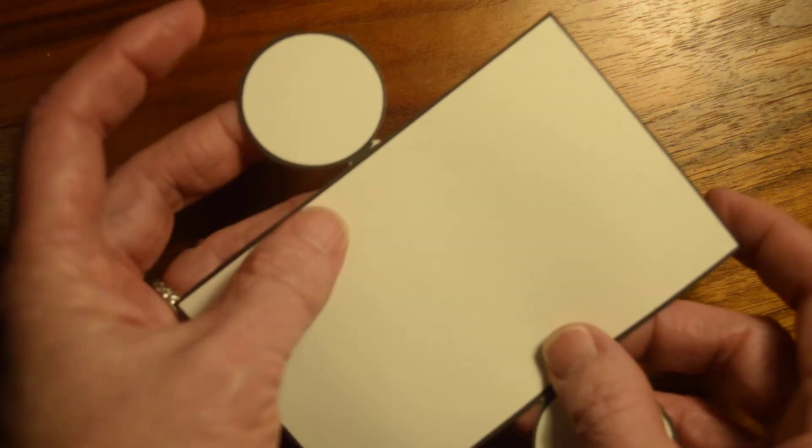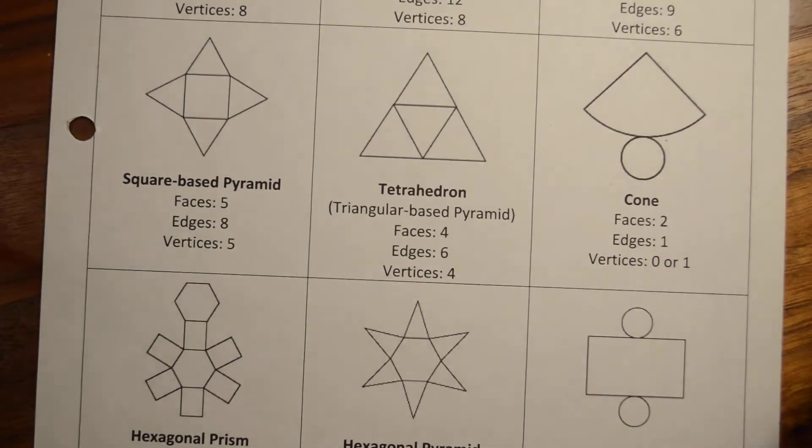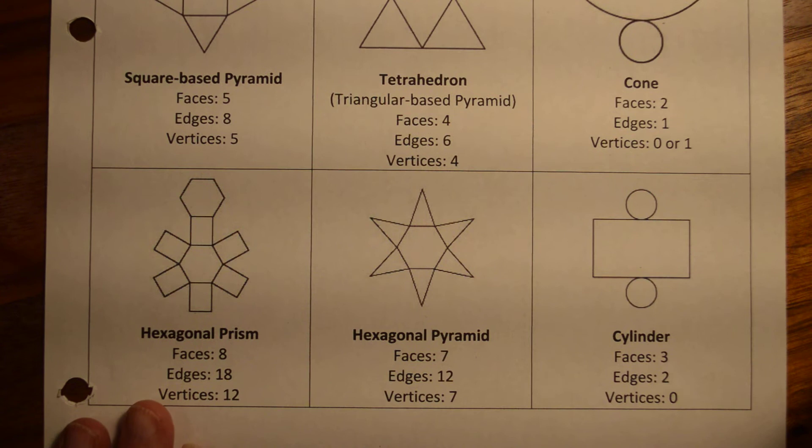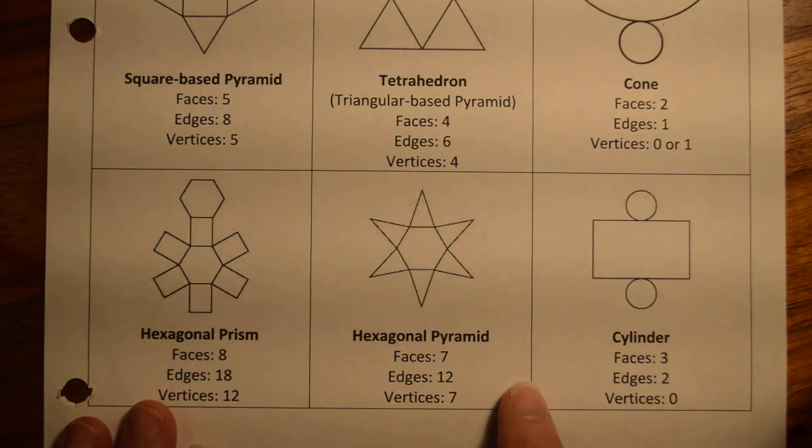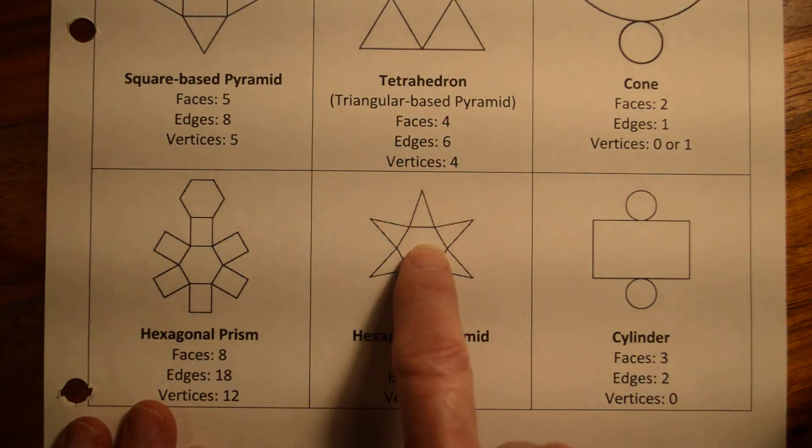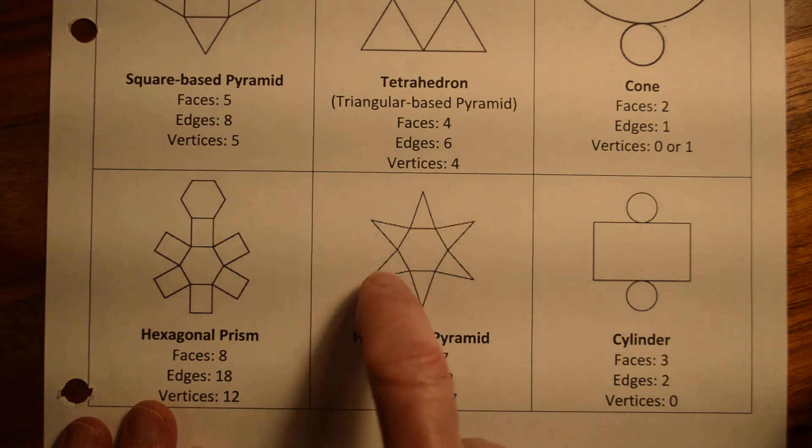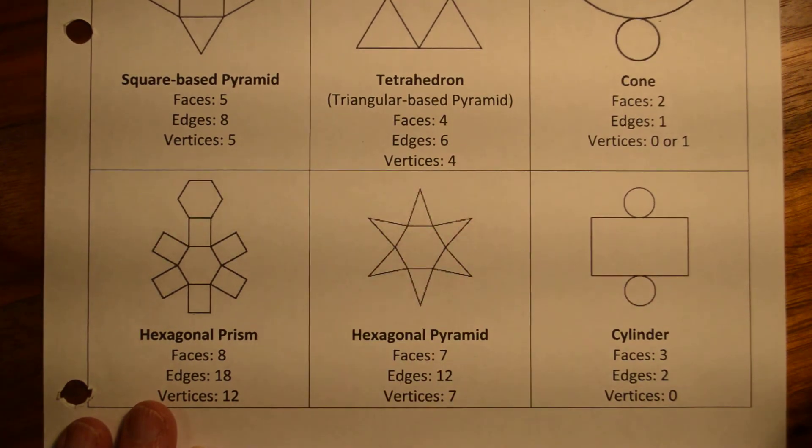So those are nets. And you're going to need those as we start talking about the surface area. And I'm going to ask you to practice drawing the nets as we do these surface area problems, just so that we can go through and say, oh, I have a hexagonal pyramid. I need to find the area of the hexagon that's the base and six identical triangles right there.